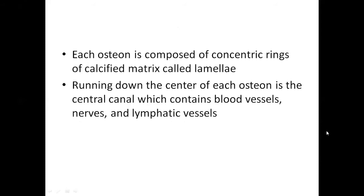Each osteon is basically composed of concentric rings made of calcified matrix, which is called lamellae. So inside an osteon, you have concentric rings of calcified matrix called lamellae. Running down the center of each osteon, you will find a central canal which contains blood vessels, nerves, and lymphatic vessels.